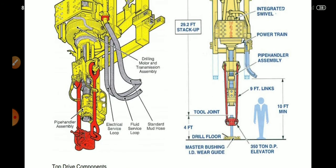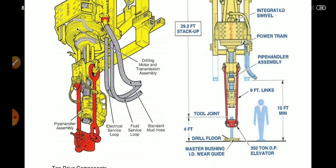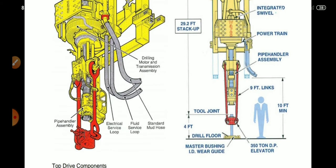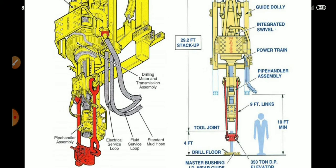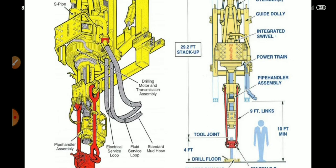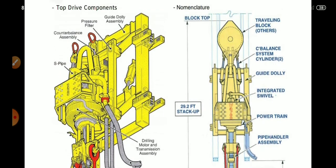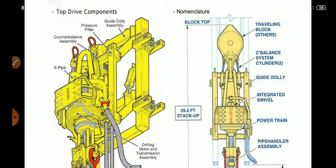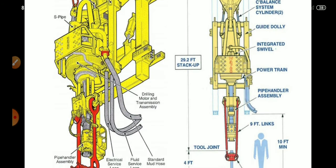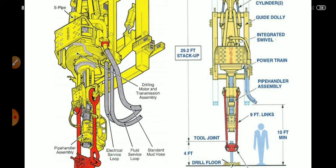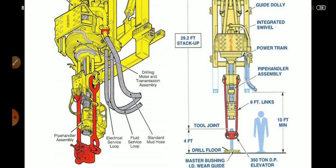Some key dimensions: the drill pipe elevator is rated for 350 tons, the links are mostly 90 feet in length, and from the rig floor to the end of the traveling block — the tool joint to the end — should be around 29 feet. That is the stack-up height.